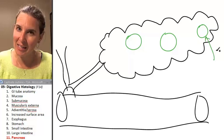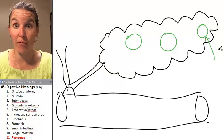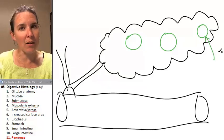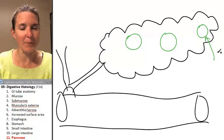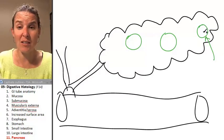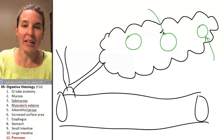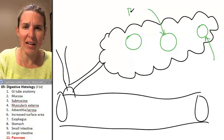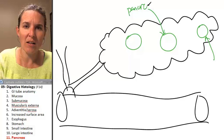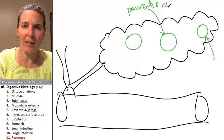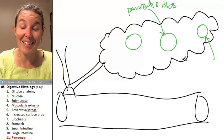Depending on the stain, they might look super different or they might look kind of similar but slightly different. They're made of cells, and these are called islets of Langerhans or pancreatic islets. They're like little islands in the pancreas.